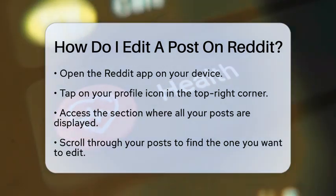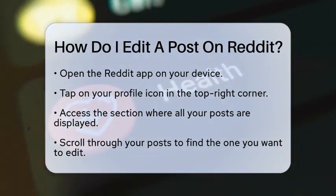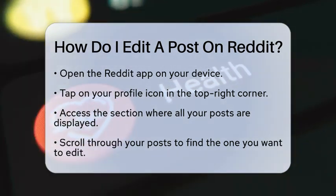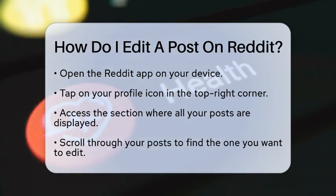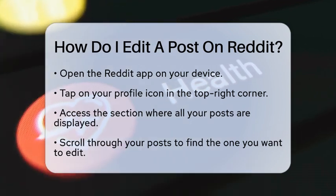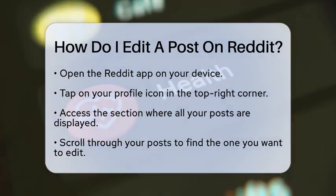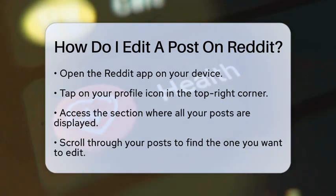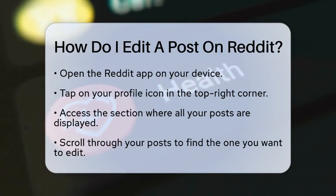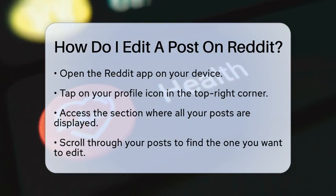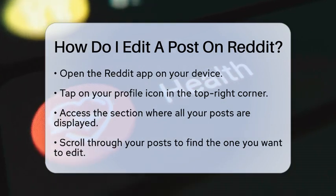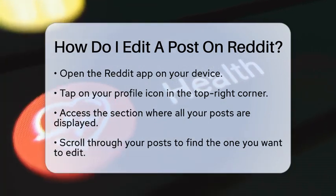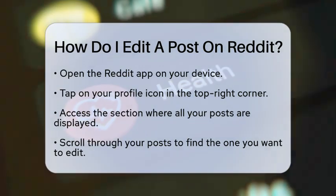First, open the Reddit app on your device. Once you are in, look for your profile icon, which is usually found in the top right corner. Tap on that icon to access your profile. This will lead you to a section where you can see all your posts.